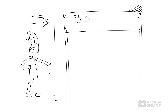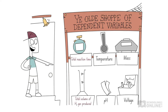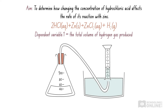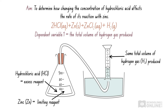Another student, Carl, suggests measuring both the total volume of hydrogen gas produced and the time taken for the reaction to reach completion. But Carl has forgotten an important detail. Even though we changed the concentration of hydrochloric acid in each trial, the acid is always in excess, meaning zinc is the limiting reagent and the reaction stops when we run out of zinc. Since each trial involves the same amount of zinc, the reaction will always produce the same total amount of hydrogen gas. Therefore, the total volume of hydrogen gas produced is not a valid dependent variable for measuring reaction rate.